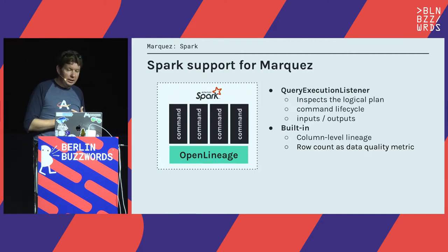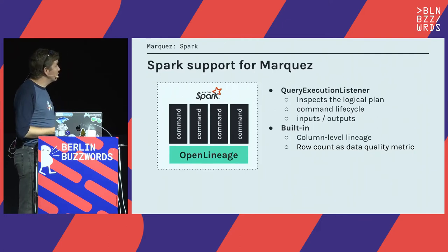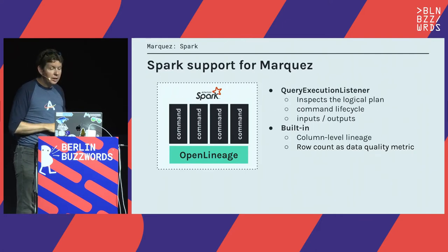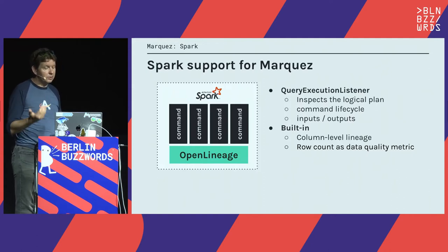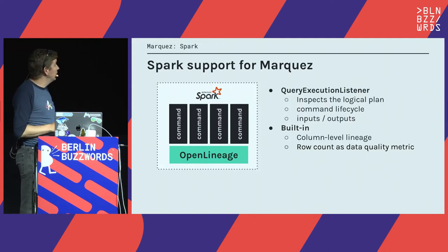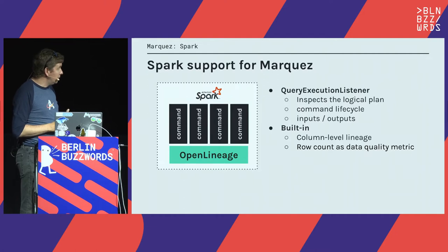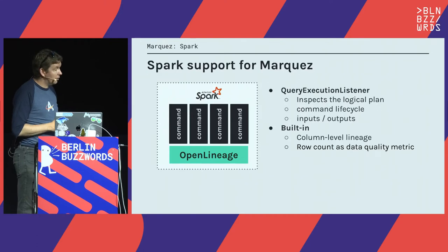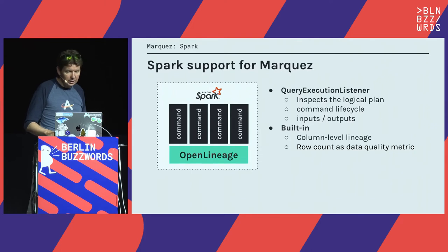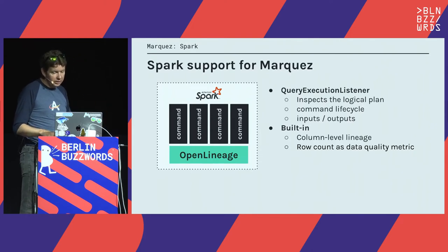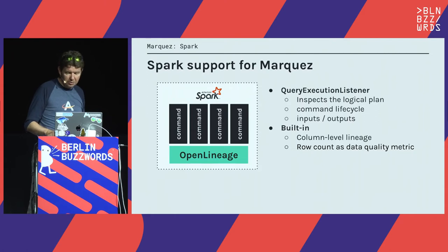Similarly, in the Spark world we have a different type of instrumentation but mapping to the same concept. Spark has this notion of a query execution listener that lets you inspect the logical plan and understand the lineage — inputs, outputs, and more information. In the current version of the Spark integration, we even extract column-level lineage from the logical plan, and row count — how many rows were written — which gets exported as a data quality metric so you can track whether there's a change over time in the number of rows generated by a particular transformation.